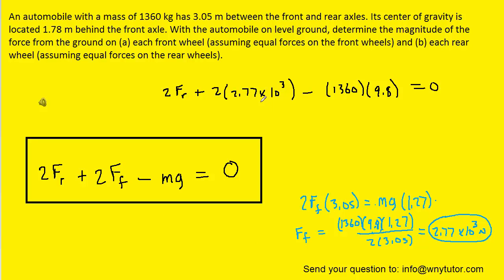So we've gone ahead and plugged in the Ff force. We'll add this term over to the right side. We'll subtract this term and then divide by 2 to get the Fr force. And when you do that you should get roughly 3.89 times 10 to the third Newtons. So this would be the force that the ground is exerting on the rear axle. And that is the correct answer to part B.